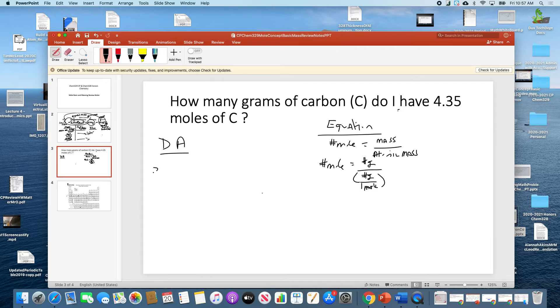I'm looking for grams of carbon. I know 4.35 moles of carbon. So now, here's the thing, this is why dimensional analysis is really easier, because what you're doing is, you need a conversion factor between grams and moles, which is called the atomic mass.